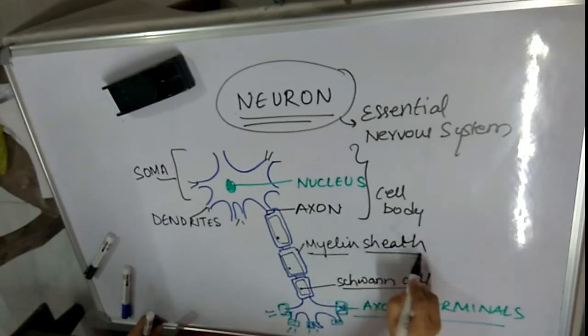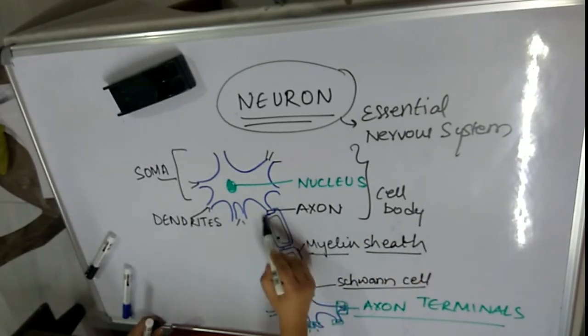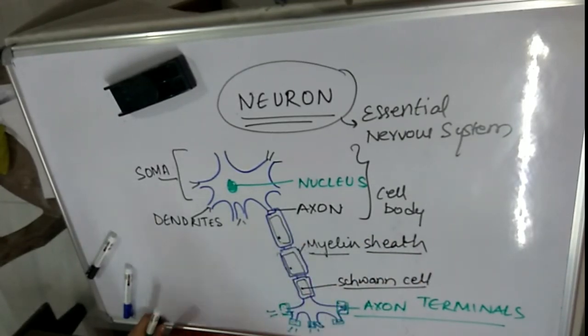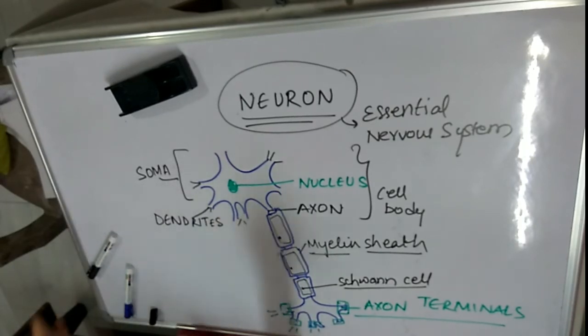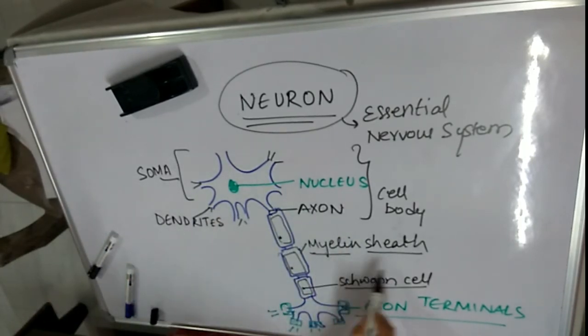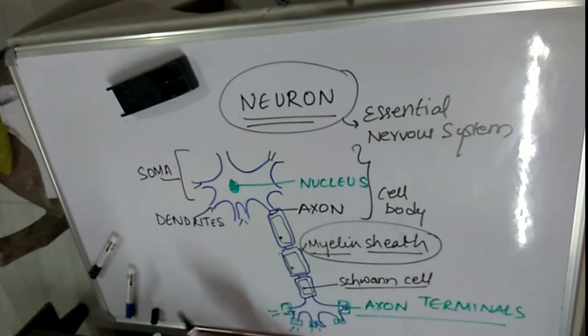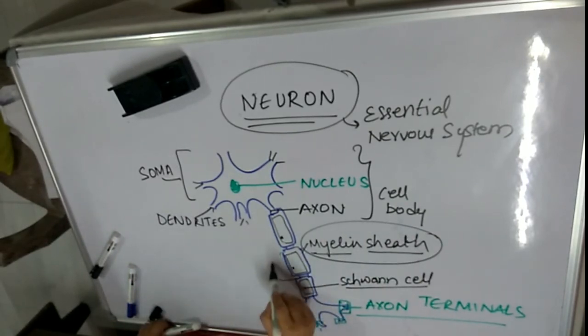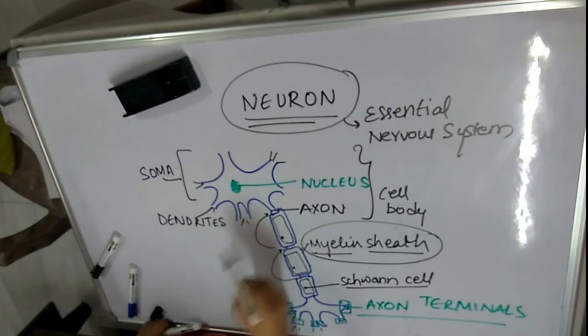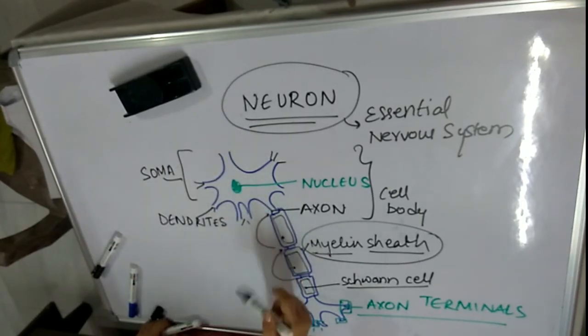So what is the myelin sheath doing here? The myelin sheath encapsulates the neuron to provide faster conduction. The conduction performed by neurons having a myelin sheath is called saltatory conduction, because the information can jump from node to node easily.